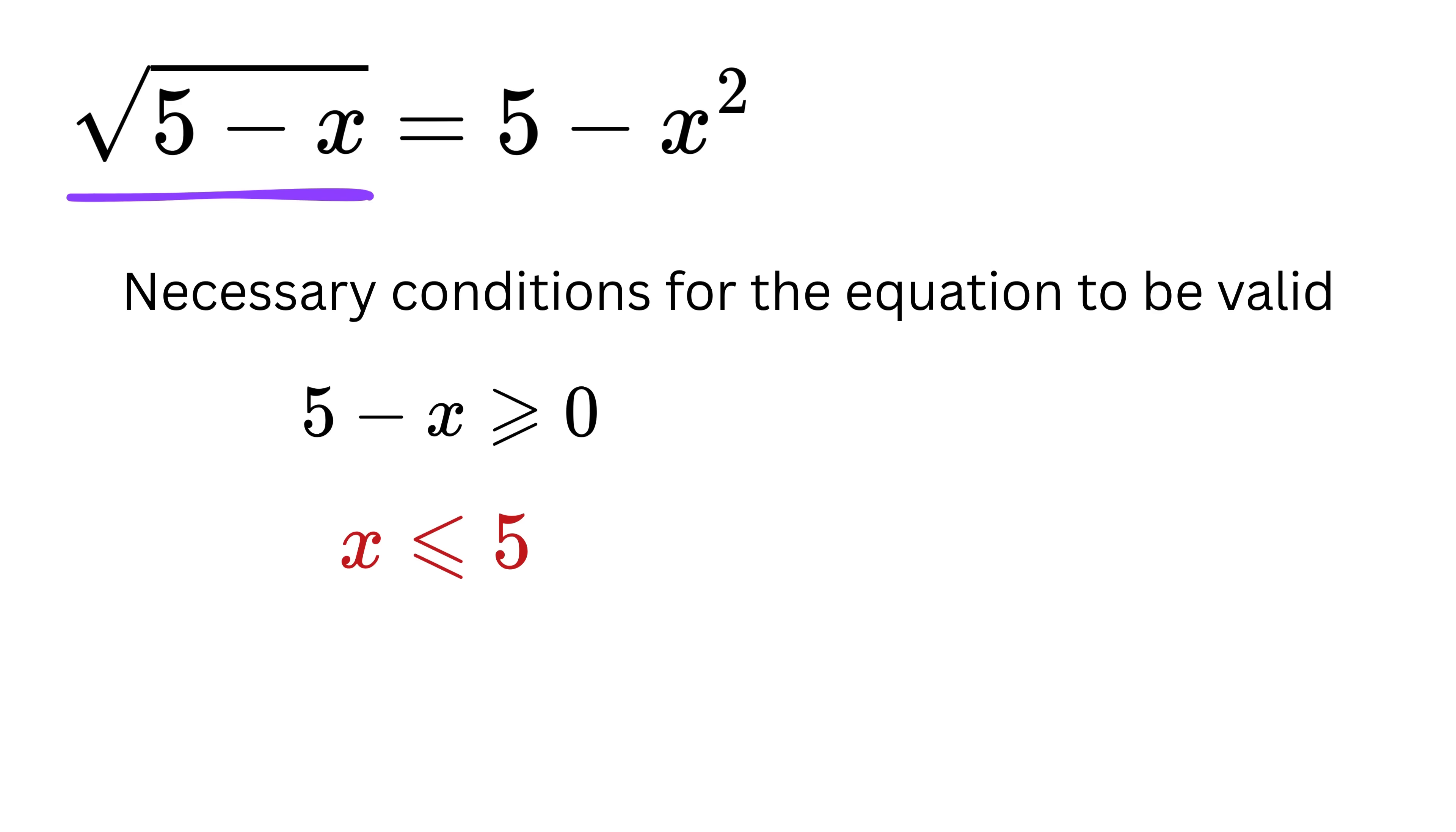Next, since the left side is a square root and is always non-negative, the right side must also be non-negative, and therefore 5 minus x squared must be greater than or equal to 0. This means x squared must be less than or equal to 5. Combining both of them implies x must be between minus square root of 5 and square root of 5.